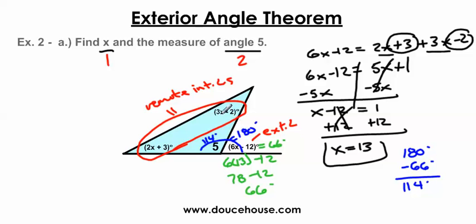If I wanted to find the other missing angles, I could plug 13 into the expressions: 3 times 13 is 39, minus 2 is 37 degrees; 2 times 13 is 26, plus 3 is 29 degrees. This is about as hard as it's going to get, and I hope this helps you understand how to use the exterior angle theorem. Have a good day, bye-bye.